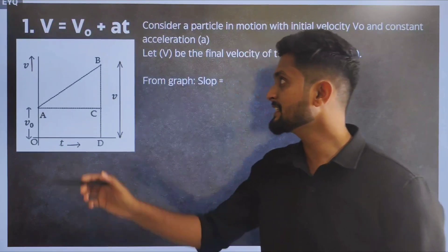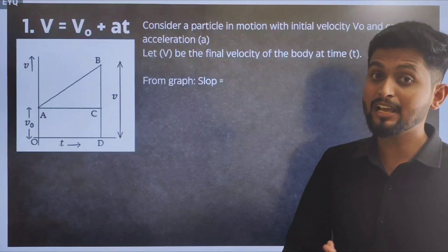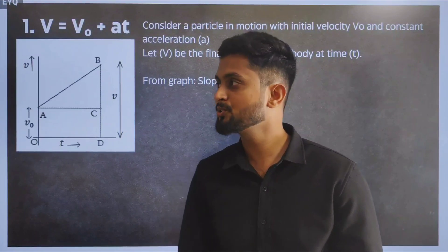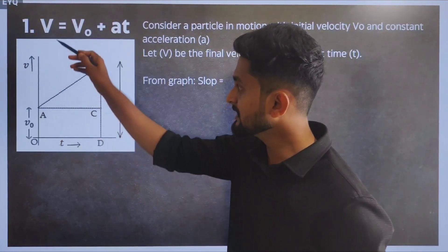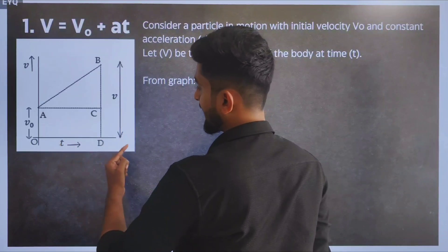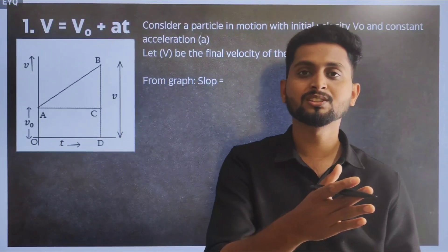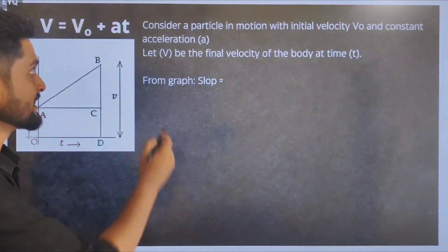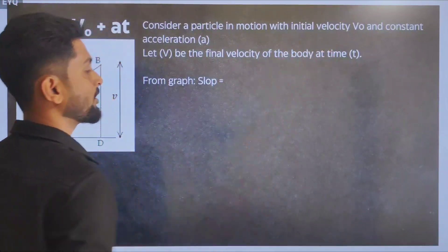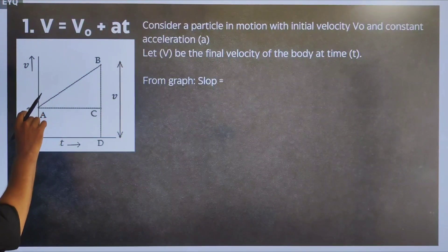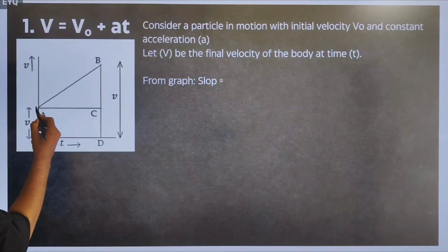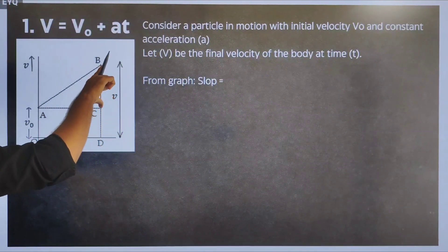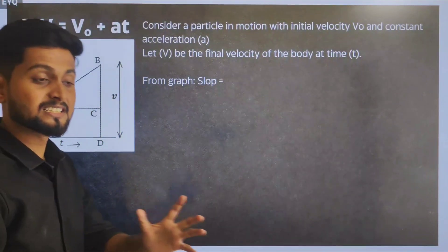The first kinematic equation is V = V₀ + AT. To derive this, we need a velocity-time graph, where velocity is on the y-axis and time is on the x-axis. Consider a particle in motion with some initial velocity — it is not zero, which is why the graph starts from a certain point. It then moves with constant acceleration A, and its final velocity is V at time T.